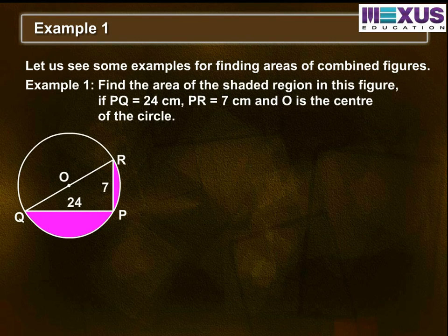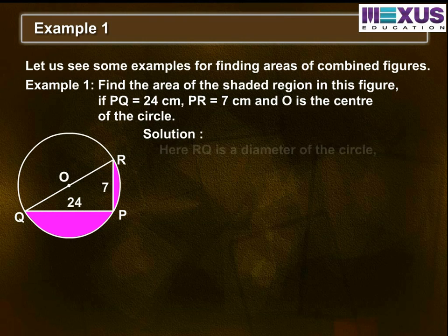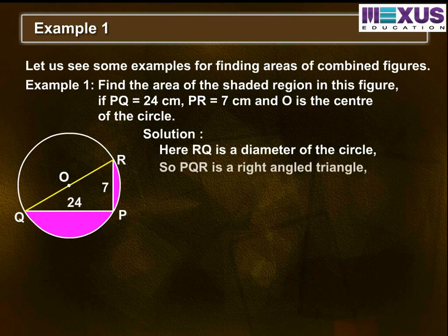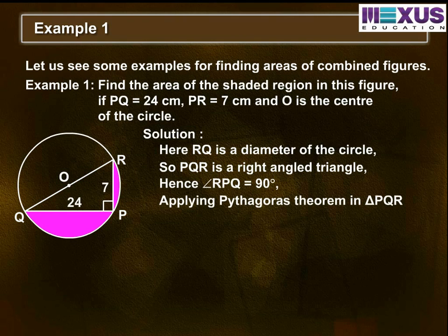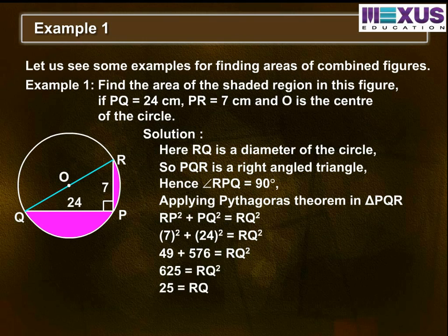Example 1: Find the area of the shaded region in this figure, if PQ is equal to 24 cm, PR is equal to 7 cm, and O is the center of the circle. Here we can see that RQ is a diameter of the circle, so triangle PQR forms a right angle triangle. Therefore, angle RPQ is equal to 90 degrees. By applying Pythagoras theorem, we get RP squared plus PQ squared equals RQ squared. By substituting the values, we get RQ is equal to 25 cm, and so the radius OR equals 25 divided by 2 cm.